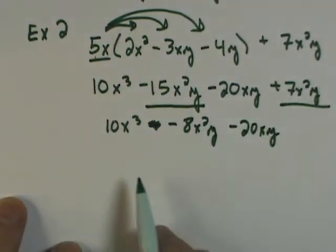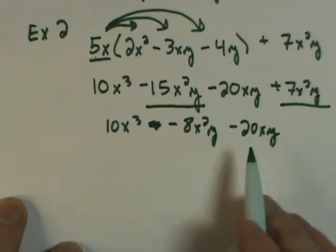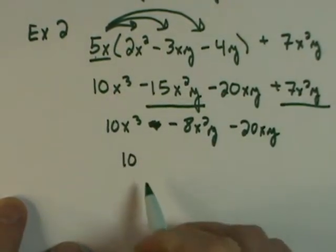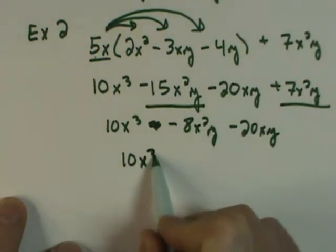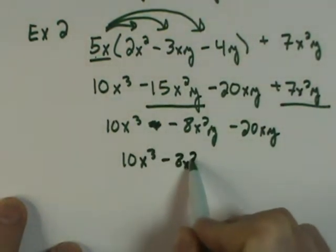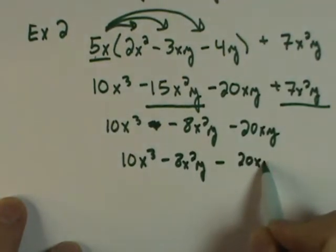As I look at the three terms that are left, I see that the labels are all different, so that tells me I would stop. Rewriting this to clean it up: 10x cubed minus 8x squared y minus 20xy.